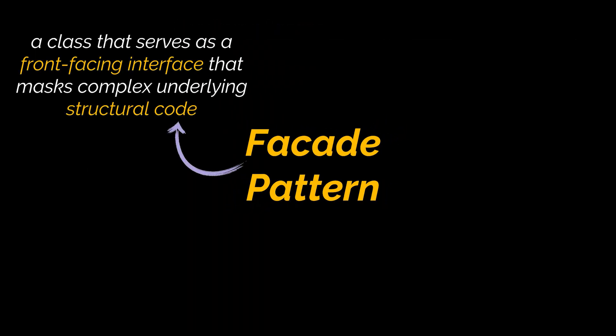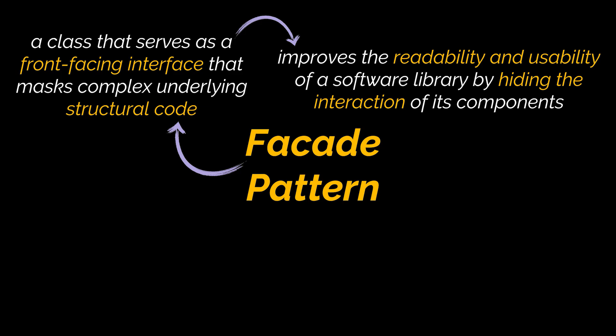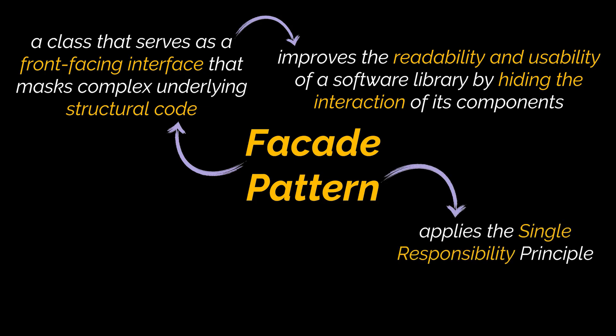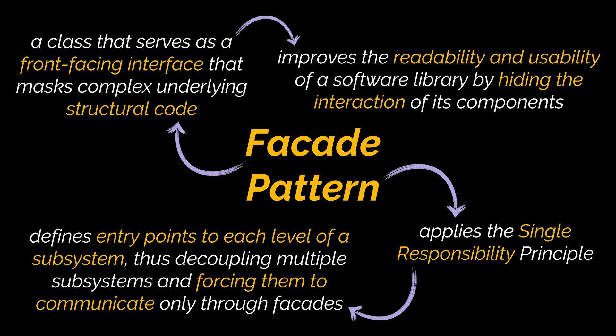To sum everything up: a facade is a class that serves as a front-facing interface that masks complex underlying structural code. By applying the facade pattern you will improve the readability and usability of a software library and hide the interaction of its components behind a single, simplified point of access. Additionally, you will be applying the single responsibility principle by providing a context-specific class for the functionalities you are creating. Finally, facades can be used to define entry points to each level of a subsystem, and you can reduce coupling between multiple subsystems by requiring them to communicate only through facades.